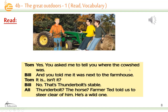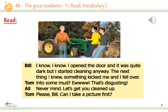'You asked me to tell you where the cowshed was, and you told me it was next to the farmhouse.' 'It is, isn't it?' 'No — that's Thunderbolt's stable.' So Thunderbolt is a horse's name. 'Farmer Ted told us to steer clear of him,' which means avoid him. 'He's a wild one' — he's not trained yet. 'I opened the door and it was quite dark, but I started cleaning anyway. The next thing I knew, something kicked me and I fell over into some mud.' 'Ew, that's disgusting.' 'Never mind, let's get you cleaned up.' 'Please, Bill, can I take a picture first?' So he's mocking his friend while he's filthy and full of mud.